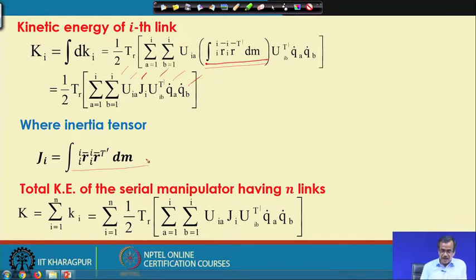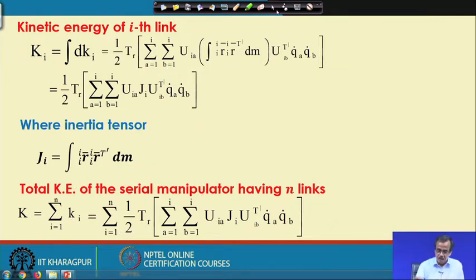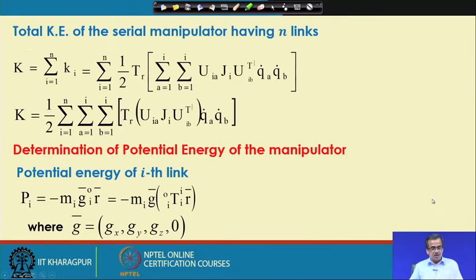The total kinetic energy for the whole manipulator is nothing but K, which equals summation i from 1 to n of Ki — that is summation i from 1 to n of half trace, summation a from 1 to i, b from 1 to i, U_ia, Ji, U_ib transpose, Q_a dot, Q_b dot. This is the expression for the kinetic energy for the whole manipulator.